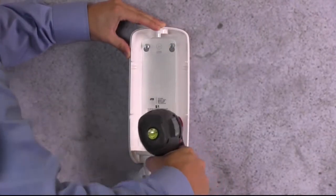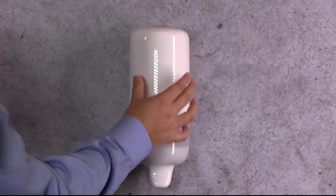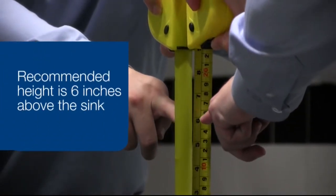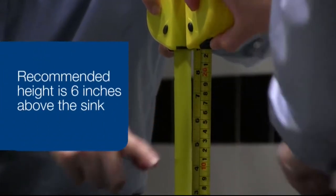You can also mount the Torque liquid soap dispenser to a mirror or glass surface. Again, the recommended height is 6 inches above the sink to allow for proper dispensing.